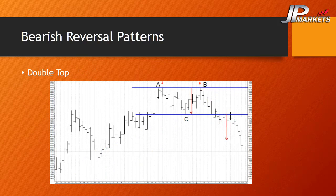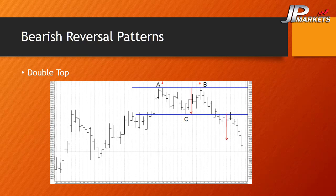Here we have the double top, which consists of two peaks with a trough at C. The breakout occurs when the market moves downside through the trough at C. The duration is typically one to three months, though sometimes less. The profit target is measured the same way as the other patterns — measure the distance between the two important price levels and add that distance for the target.